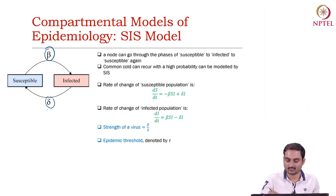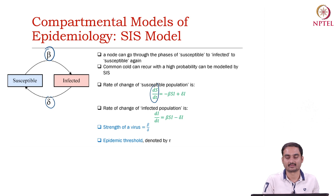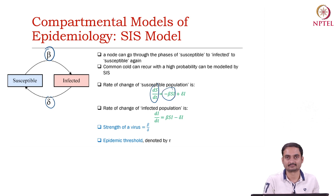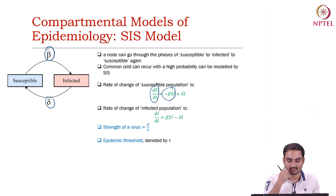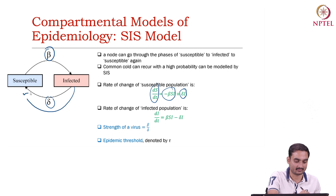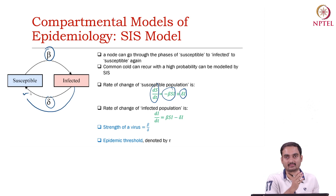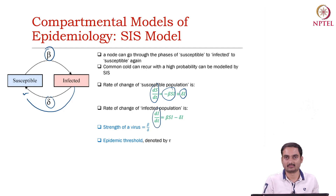What is the rate of change of susceptible users? One term indicates the decrease in the susceptible population, whereas another term indicates the increase from infected back to susceptible.